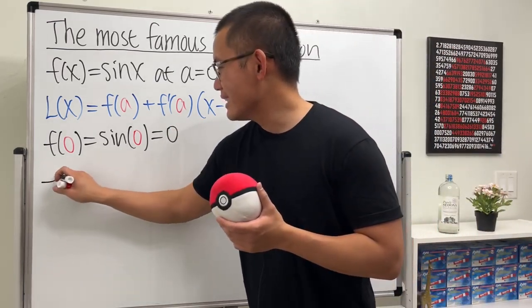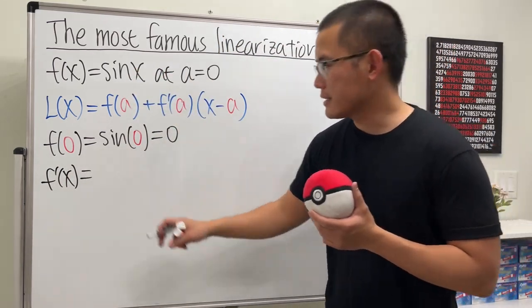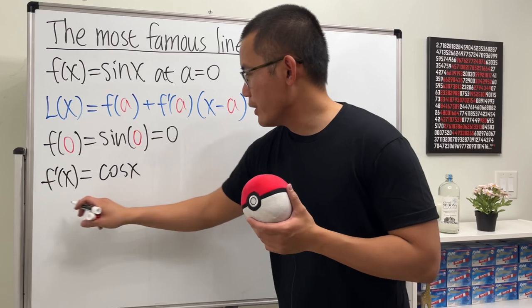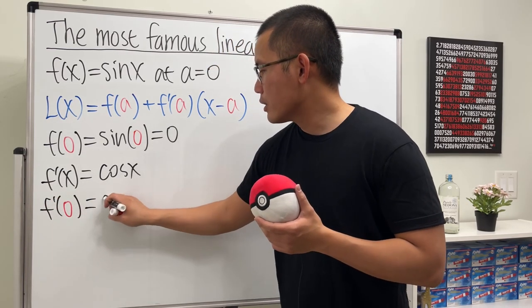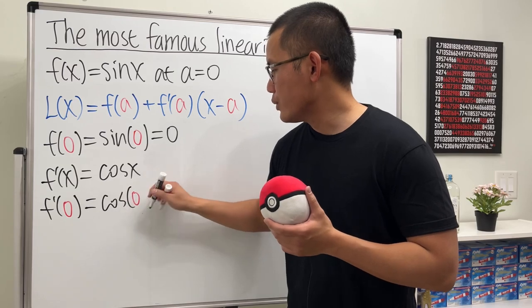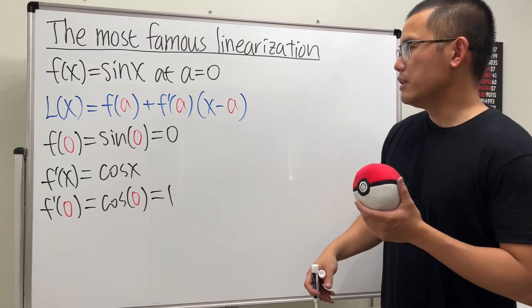Next we need the derivative, so let's go ahead and differentiate sine x, which is going to be just cosine x. Cool. And then plug in zero. This time though, cosine zero is equal to one.